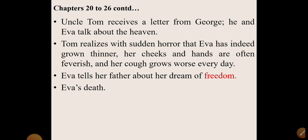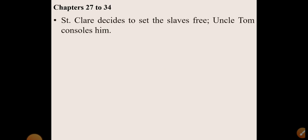Little Eva dies in chapter 26, and it is a heartbreaking scene in the novel. Before she dies, she invites all the slaves on her father's estate to gather around her bed. She takes a promise from her father that after her death he should release all the slaves from the estate. Uncle Tom consoles St. Clare.